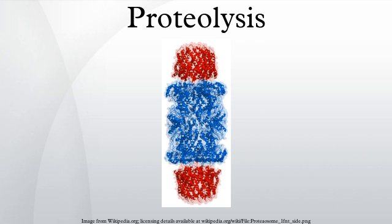In human digestion, proteins in food are broken down into smaller peptide chains by digestive enzymes such as pepsin, trypsin, chymotrypsin, and elastase, and into amino acids by various enzymes such as carboxypeptidase, aminopeptidase, and dipeptidase. It is necessary to break down proteins into small peptides and amino acids so they can be absorbed by the intestines, and the absorbed tripeptides and dipeptides are also further broken into amino acids intracellularly before they enter the bloodstream.